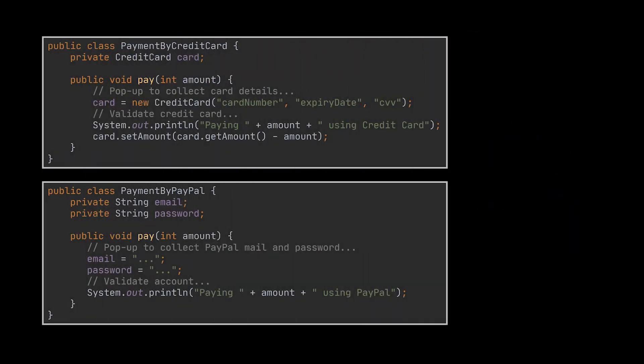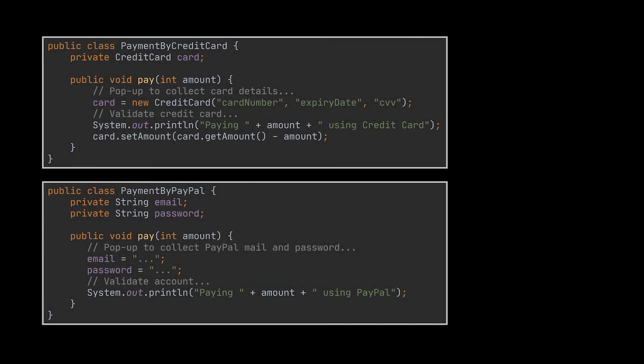To do this, we have to start by extracting each payment-specific logic to its own class. In our example, we are going to have the payment by credit card and the payment by PayPal classes.